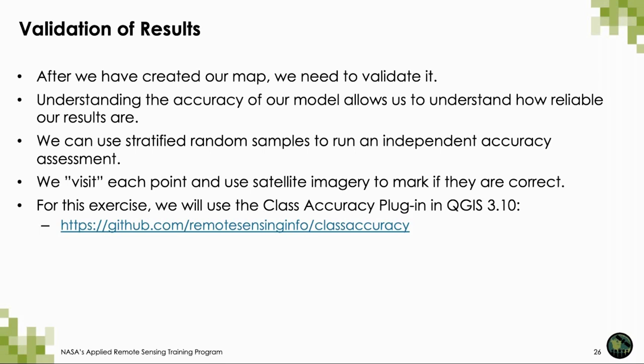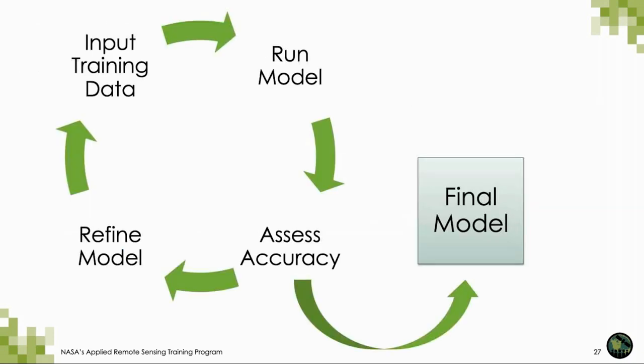For this exercise, we will use the class accuracy plugin in QGIS 3.10. Today we're going to go through this iteration once, but this is a continual process — we run our model, see how accurate it is, and if we're not happy with it, we can refine the model by inputting more training data.